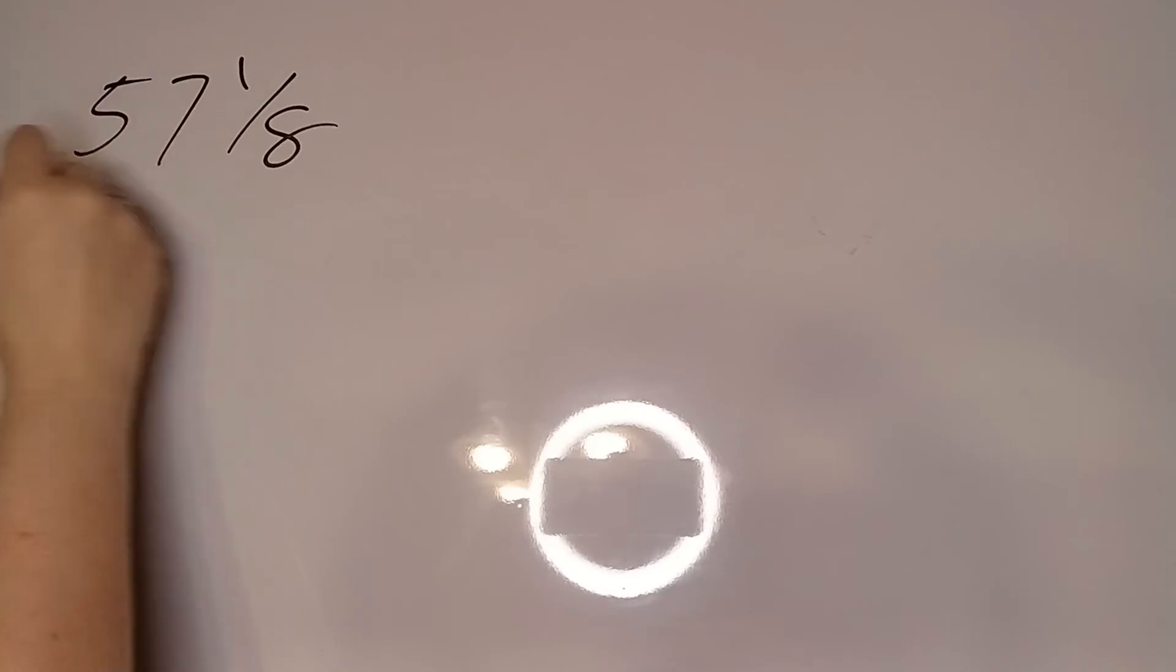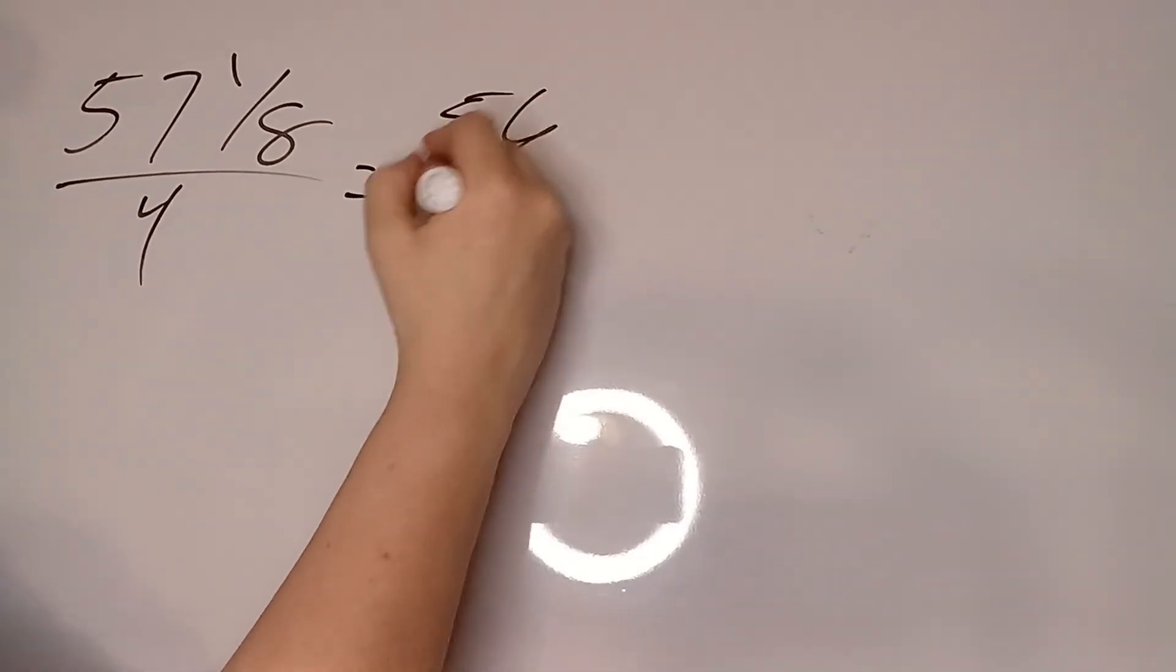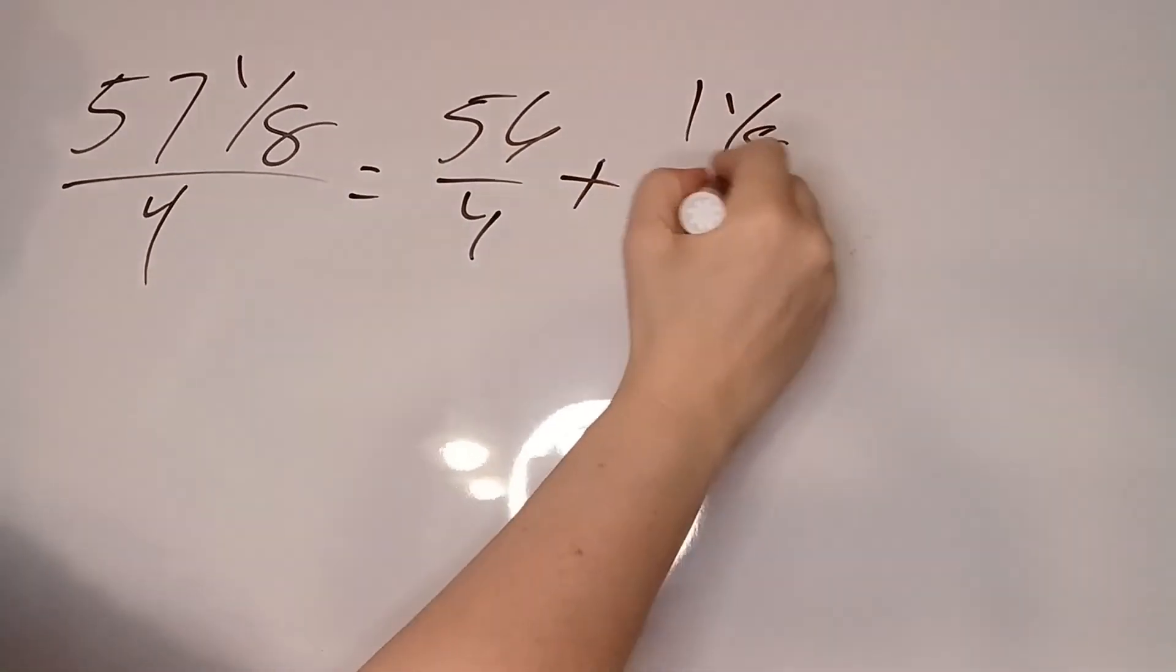57 and an eighth divided by 4. All right, 15 times 4 is 60. So that means that we're looking at 14 times 4, which would be 56.